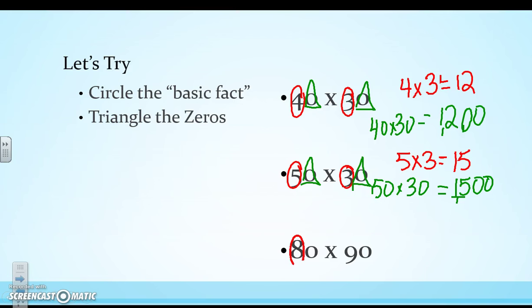Let's try this next one. My basic fact is 8 times 9, which is 72. Triangle the 0s. I have two 0s. So my final answer to 80 times 90 is 7,200.